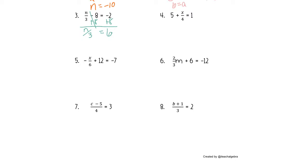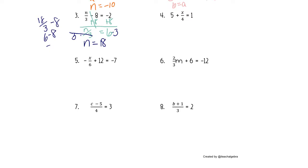Now we want to get n alone. So to do that, we have to get rid of this divided by 3. The opposite of divided by 3 is multiply by 3. So 3 divided by 3 cancels, and we're left with n equals 18. Let's plug it in and make sure it works. 18 divided by 3 minus 8 — that's 6 minus 8, which is negative 2. And that's the same as what we have.